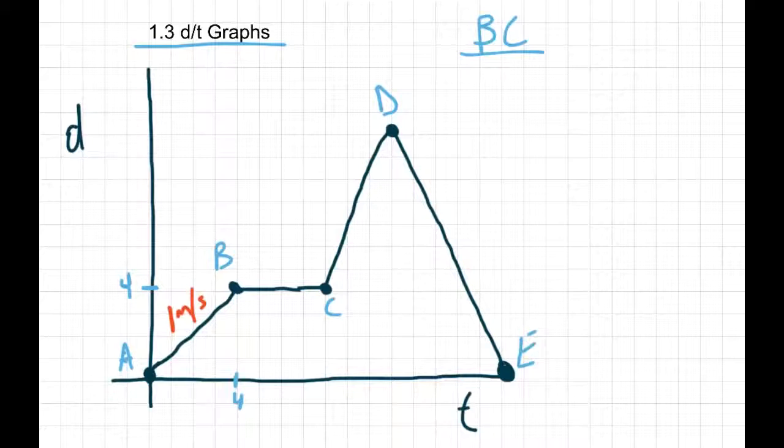So using slope, you could think of it as 4 minus 4, which would be 0 divided by 4 seconds, or just think of it as being a flat line. We have no slope, therefore, it's 0. So from B to C, we're not moving, so it's 0.